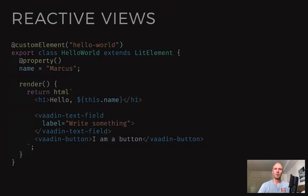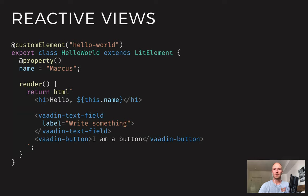Let's start by looking at some of the basics of how this works. First of all, the new API allows you to define client-side views using a reactive programming model in TypeScript. You define the template using HTML, and you're able to use JavaScript expressions inside of that to make it dynamic.